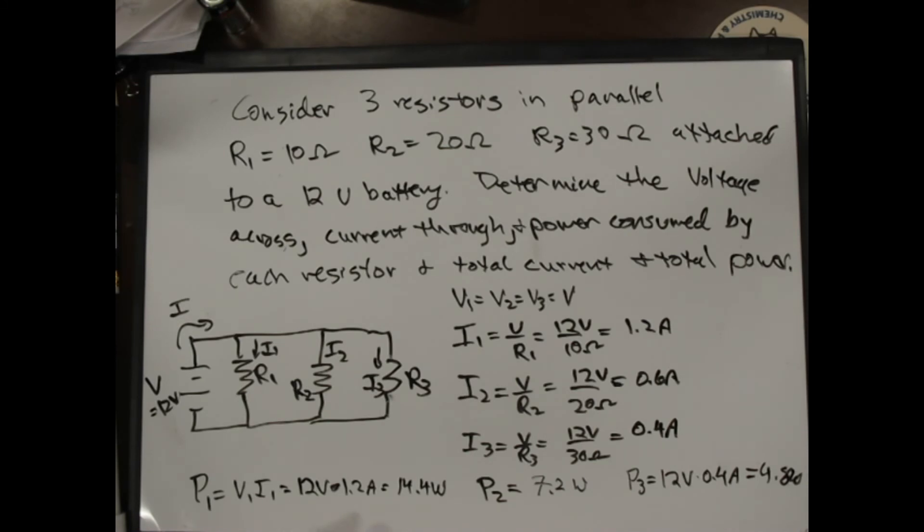Whereas in the series circuit, the largest resistor gets the most power, you saw in the last example. In a parallel circuit, the smallest resistor gets the most power, because it's the easiest place for the current to go through. So it gets most of the current and most of the power.